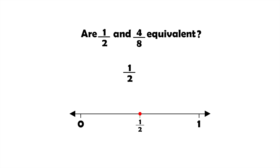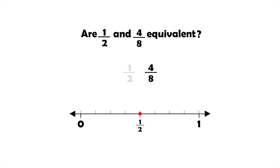But how can we represent the second fraction four eighths on the same number line? Again, the fraction four eighths is located between zero and one because it represents four parts of a total of eight. To represent four eighths, we divide the region between zero and one into eight equal parts this time because eight is the denominator of our fraction.